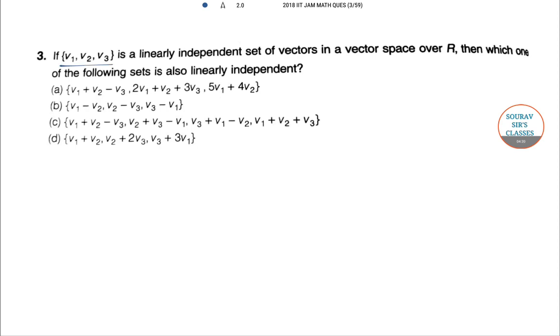If v_1, v_2, v_3 is a linearly independent set of vectors in a vector space over R, then which of the following sets is also linearly independent? We have a linearly independent structure and we're checking if it gives another linearly independent formation. We have to go option-wise.